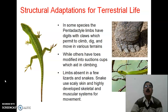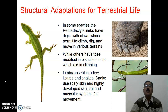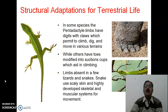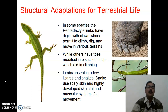In some species the pentadactyl limbs have digits with claws which permit them to climb, dig, and move in various terrains, as visible in the slide. Others have toes modified into suction cups which aid in climbing, as seen in the case of lizards. Limbs are absent in a few lizards and snakes; snakes use their scaly skin and a highly developed skeletal and muscular system for movement.